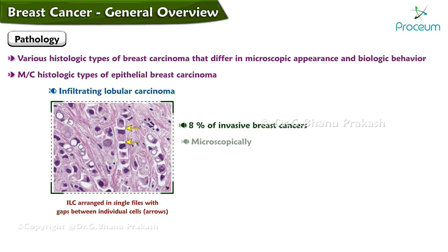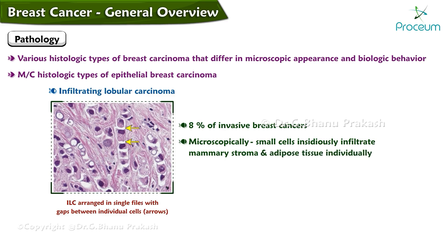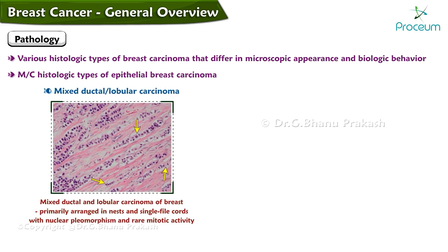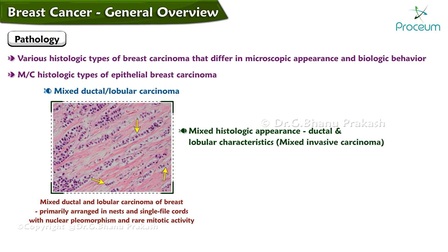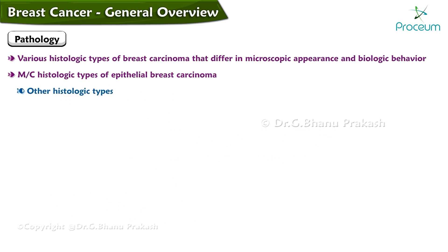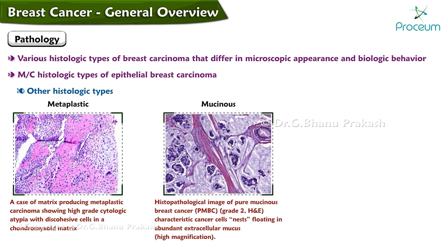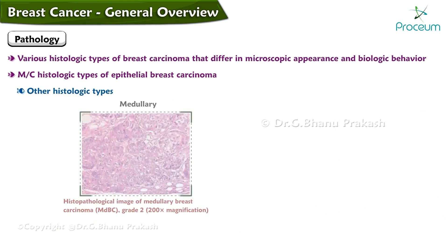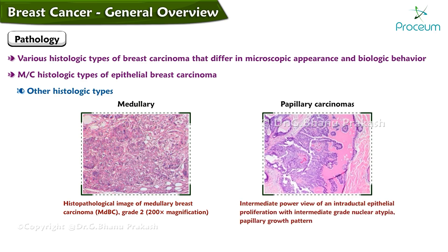Infiltrating lobular carcinomas comprise about 8 percent of invasive breast cancers. Microscopically, they are characterized by small cells that insidiously infiltrate the mammary stroma and adipose tissue individually and in a single-file pattern. Mixed ductal-lobular carcinoma comprises 7 percent of invasive breast cancers. Other histologic types include metaplastic, mucinous, tubular, medullary, and papillary carcinomas, together accounting for less than 5 percent of invasive cancers.